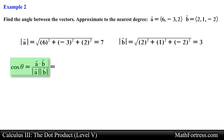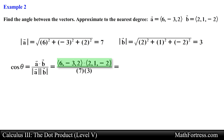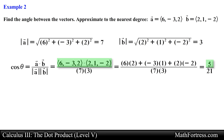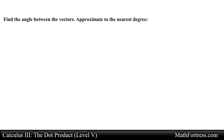Next let's use the rearranged geometric definition of the dot product and substitute the various values on the right side of the expression. The dot product between vector A and vector B simplifies to 5 and the product of the vectors' magnitudes simplifies to 21. Finally it is just a matter of taking inverse cosine of both sides; rounding to the nearest degree we obtain 76 degrees as the final answer.